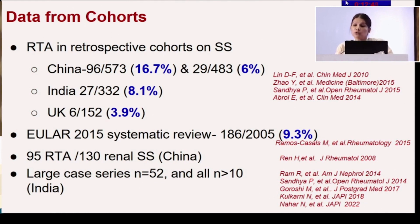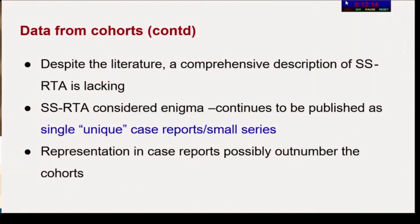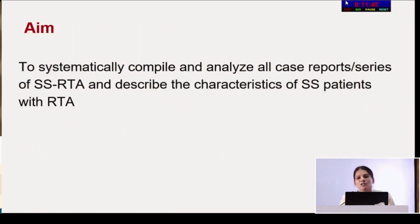Other large case series reporting exclusively on Sjogren's syndrome and RTA include NS52 from SIMS in Tirupati, and all large series numbering more than 10 case reports are from India. Despite this literature, a comprehensive description of clinical features is lacking. For specialists other than rheumatology, Sjogren's syndrome with RTA is considered an enigma, leading to continued single case reports and small series. The representation in case reports possibly outnumbers cohort data, which inspired a systematic compilation of all case reports to describe characteristics of Sjogren's patients with RTA.